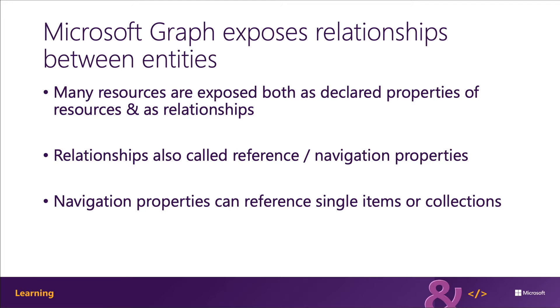For example, mail folders, manager, and direct reports of a user are all exposed as relationships. Normally you can query either the properties of a response or one of its relationships in a single request, but not both.